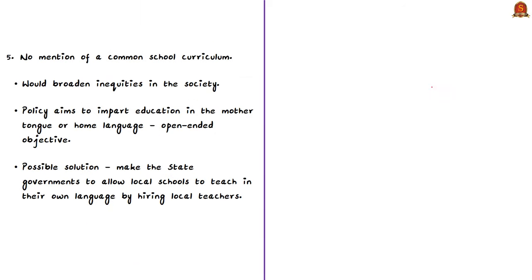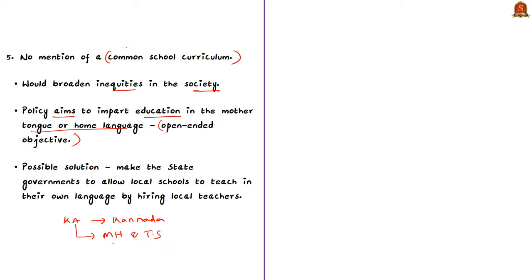The next concern is that the new education policy advocates equitable and inclusive education but there is no mention of a common school curriculum, so there are worries that it would broaden inequalities in society. The policy aims to impart education in the mother tongue or home language, but authors feel this objective is open-ended. For example, in Karnataka, Kannada will be taught in schools under this policy, but this ignores the fact that areas of Karnataka bordering Maharashtra and Telangana prominently speak Marathi and Telugu respectively — so if all of Karnataka is taught in Kannada, young children who only understand their mother tongue will not be able to grasp basic facts.